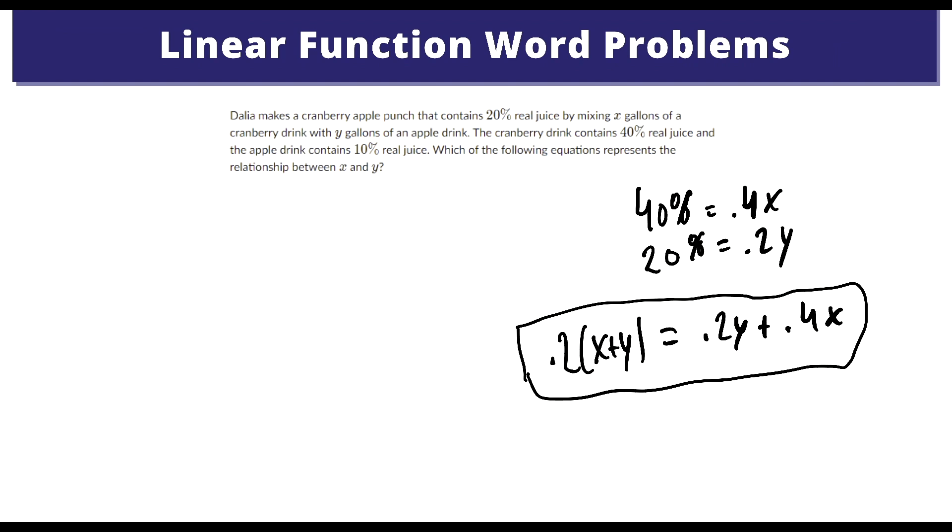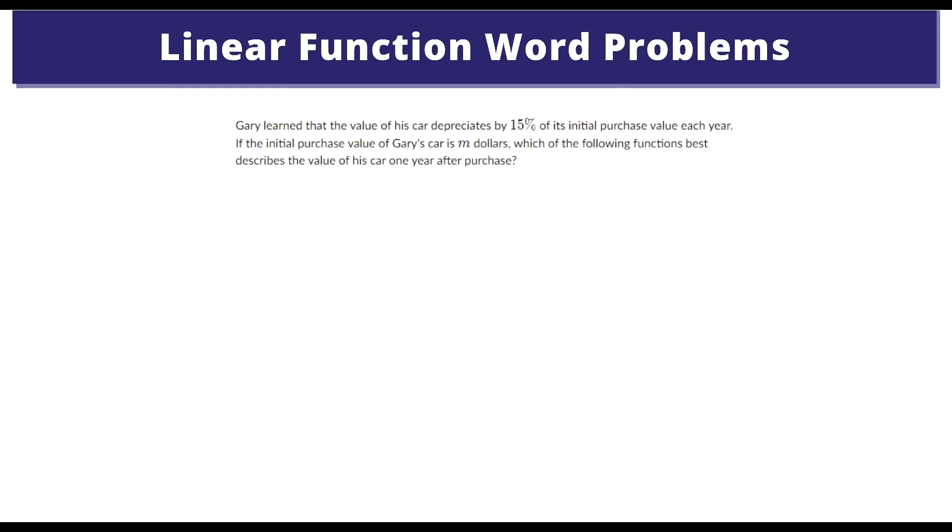On to the next one. Gary learned that his car depreciates by 15% of his initial purchase value each year. If the initial purchase value of Gary's car is m dollars, which of the following functions best describes the value of his car one year after purchase? So it's depreciating by 15%. We could make 15% into 0.15.